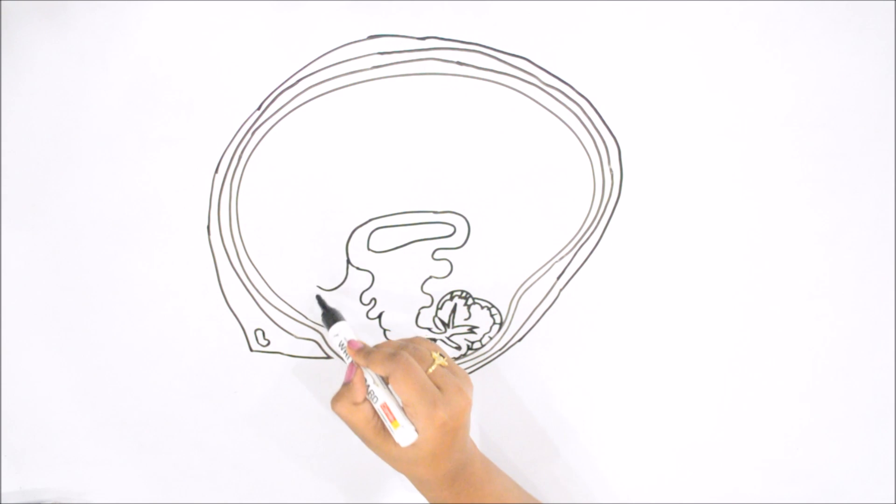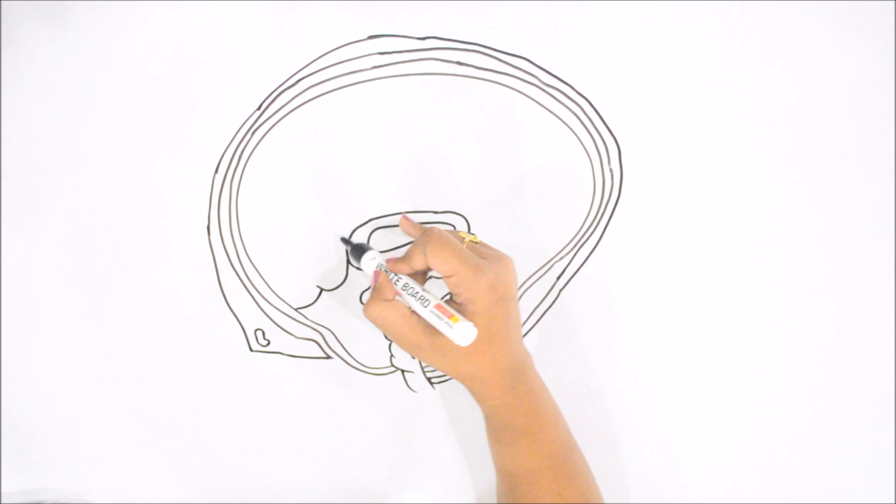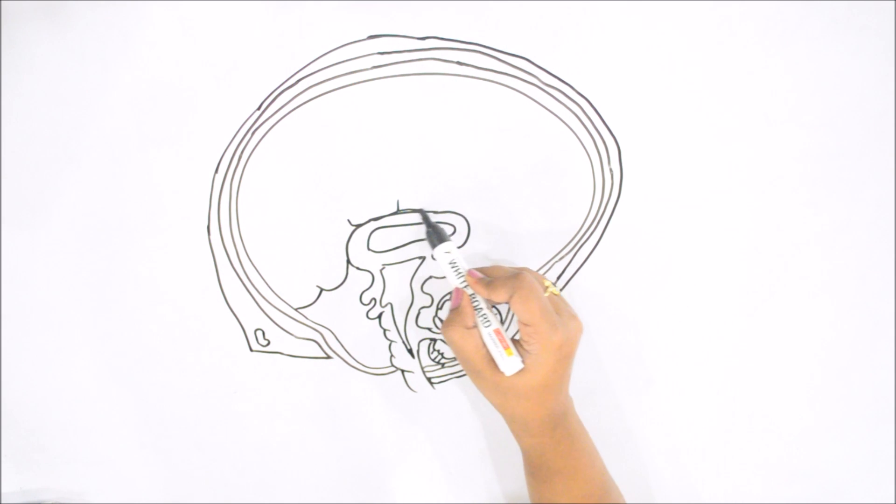The largest part of brain: cerebrum. Before this, this is your midbrain containing hypothalamus. We will see it later on. Now, the largest part, cerebrum, part of forebrain.